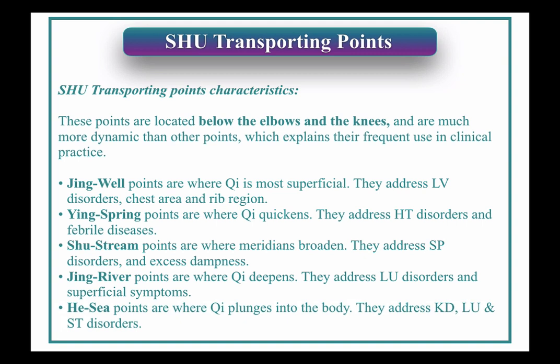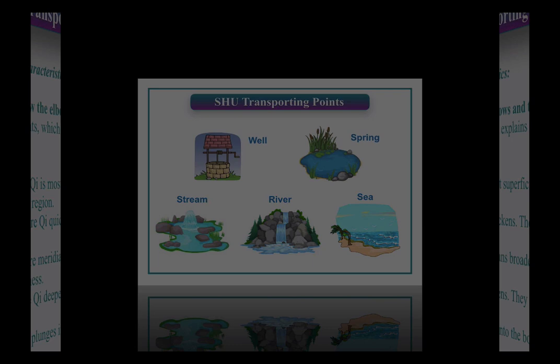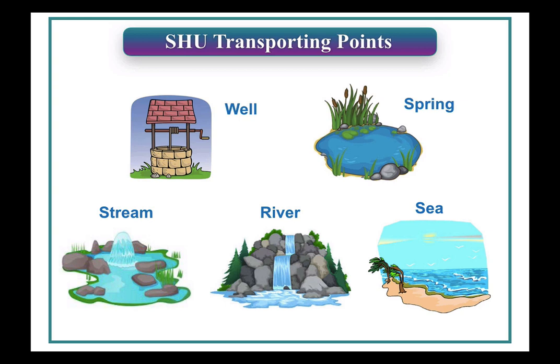So that gives you the five Shu transporting points: the Jing Well, the Ying Spring, the Shu Stream, the Jing River, and the He-Sea. Half of those words are Chinese and the other half is the English translation. Each of those points has a water-related name — a well is the least amount of water, then a spring has a bit more, a stream has more, a river has more, and the sea has the most water.